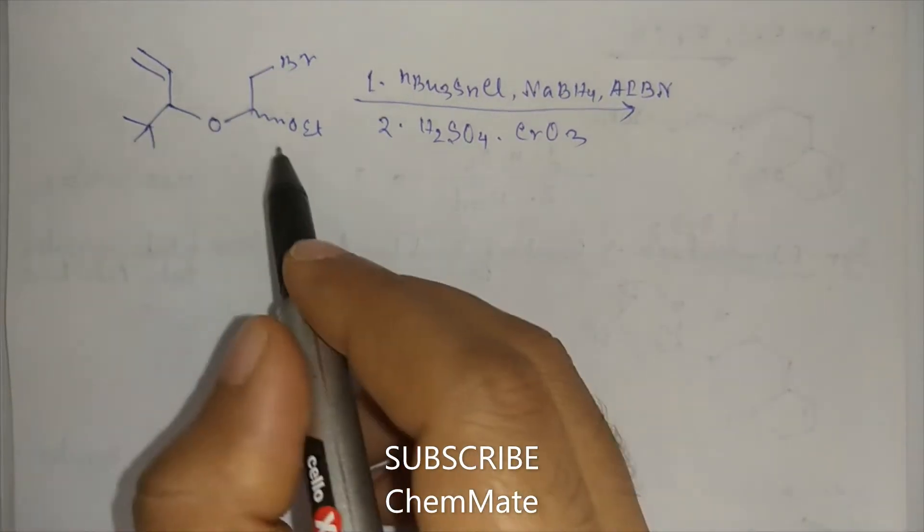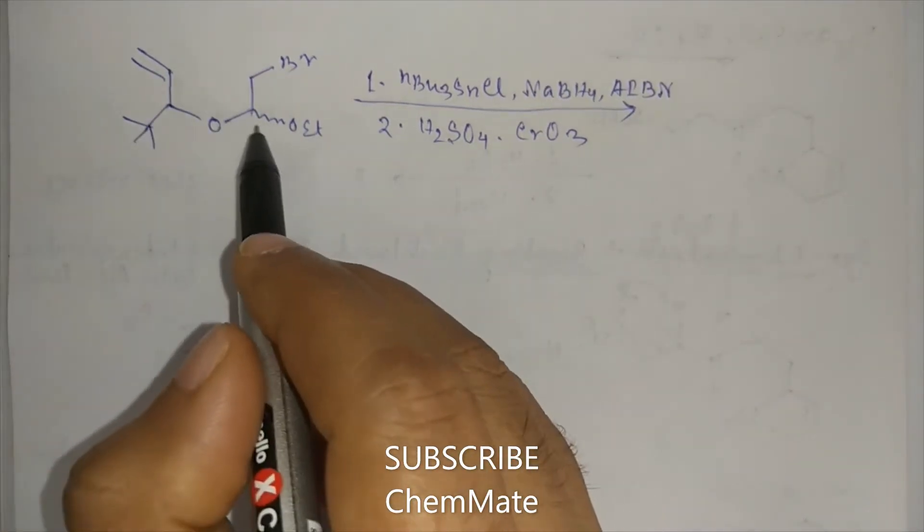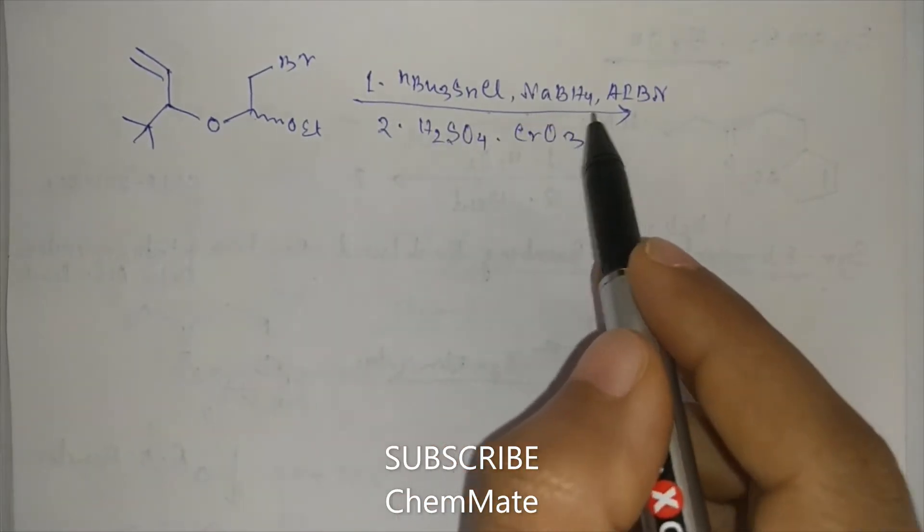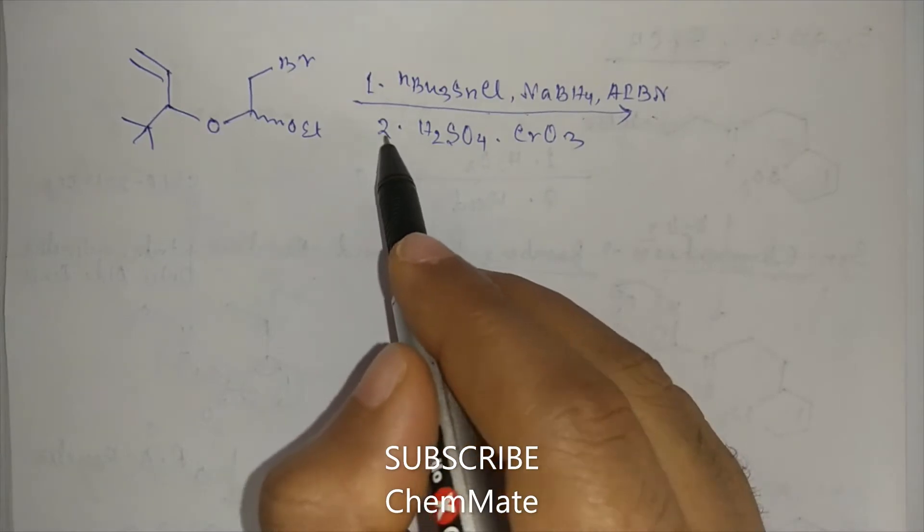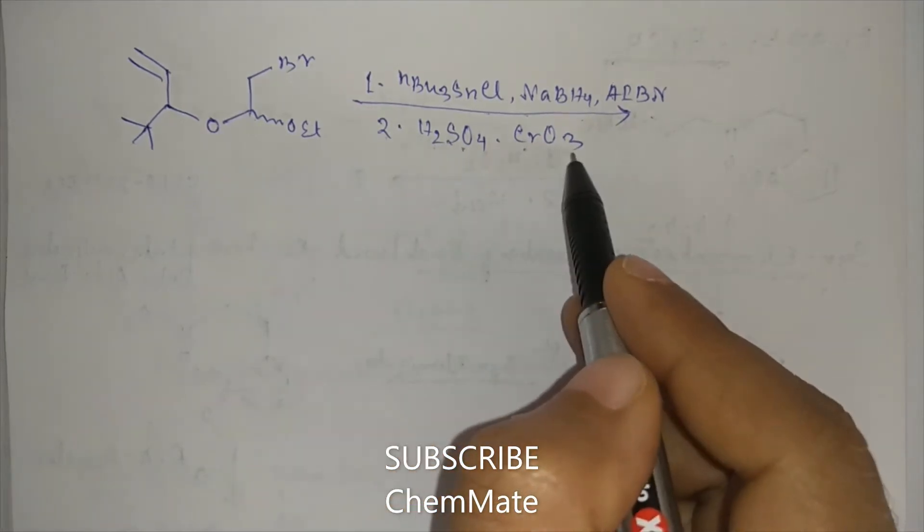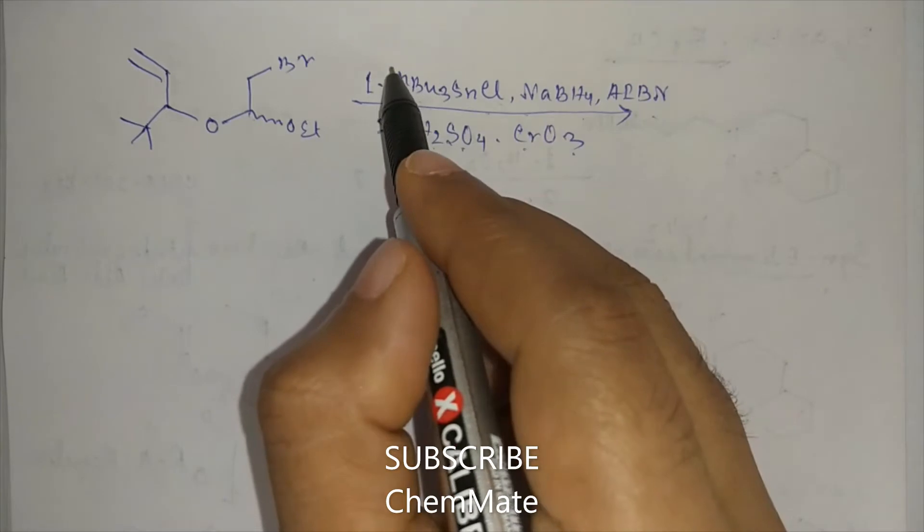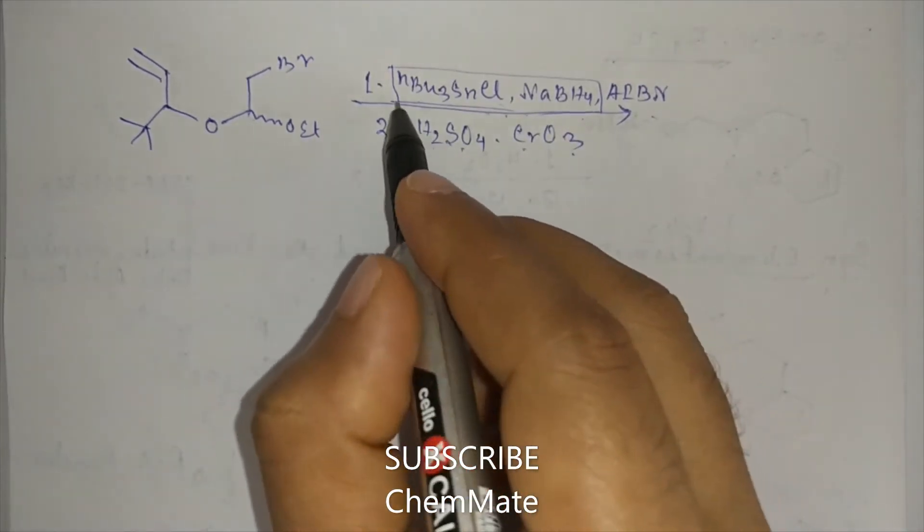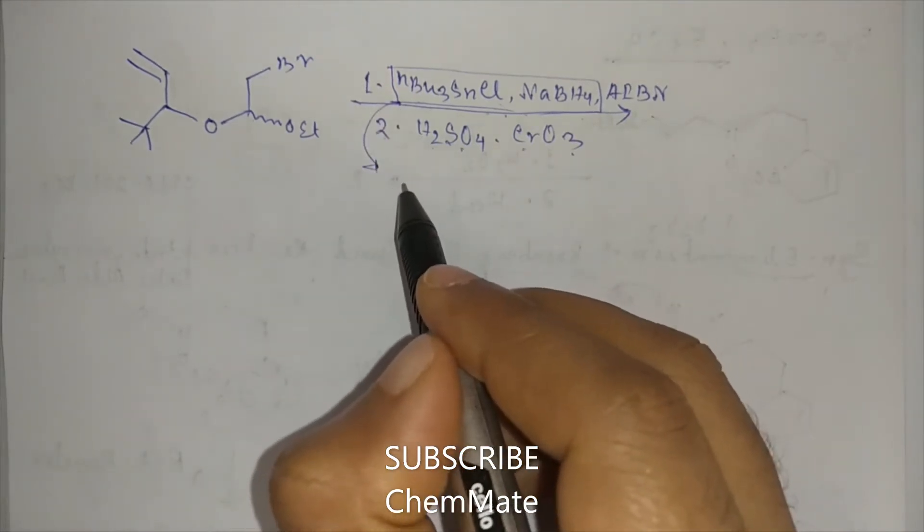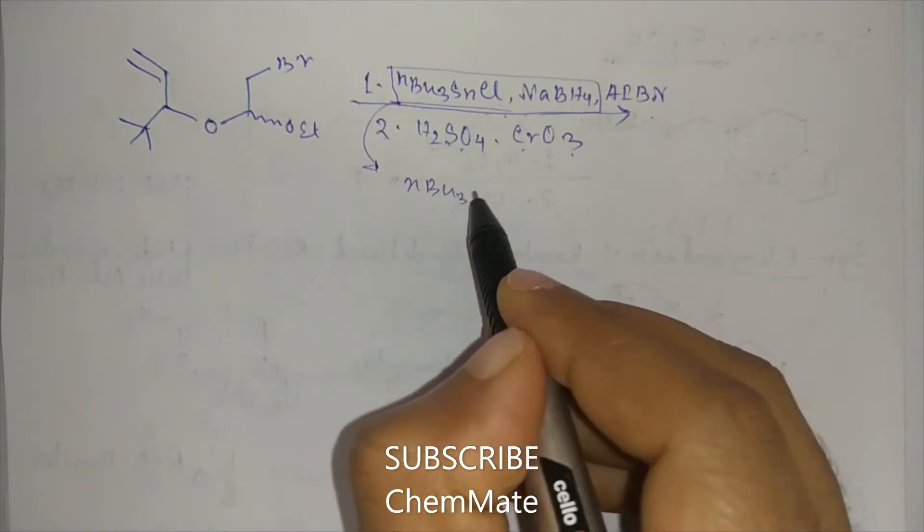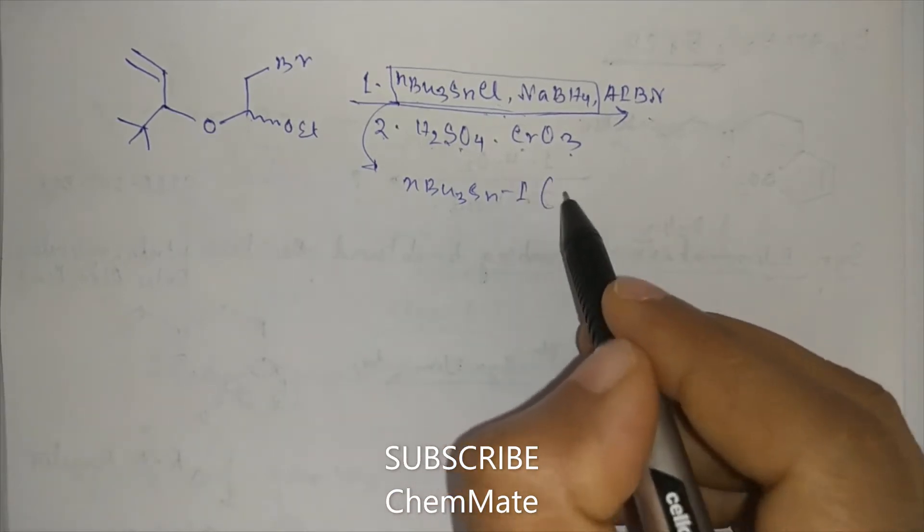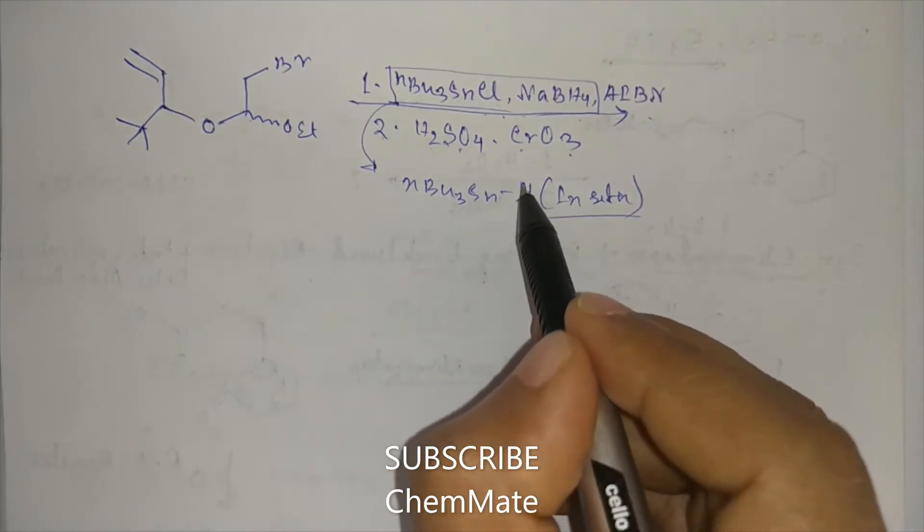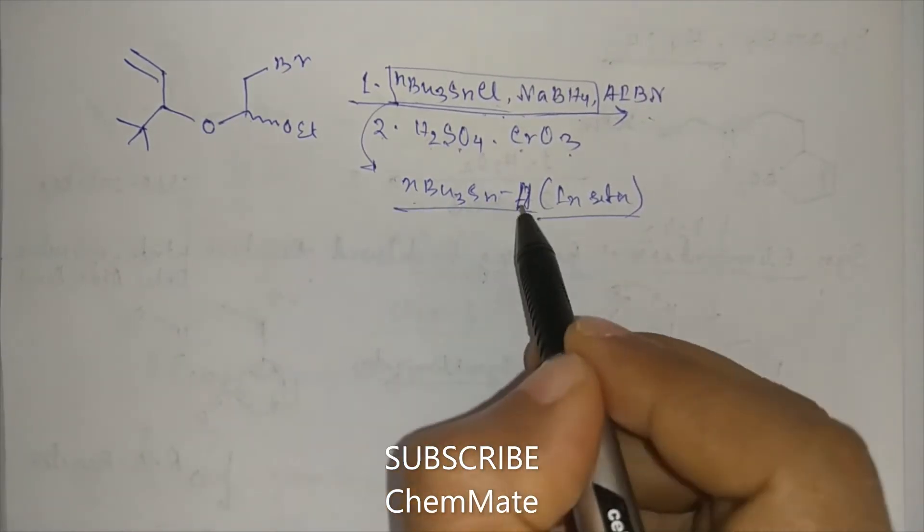Hi guys, how are you? Here is a very interesting question. This substrate is treated with Nbu3SNCl, NaBH4, AIBN, then H2SO4/CrO3. So this reagent Nbu3SNCl, NaBH4 produces Nbu3SNH in situ. In the reaction mixture, it generates Nbu3SNH.